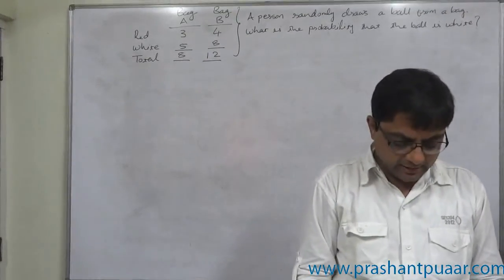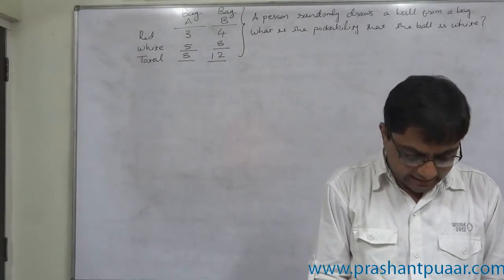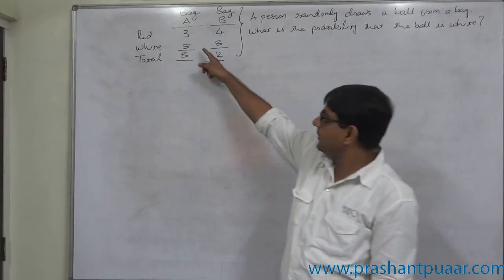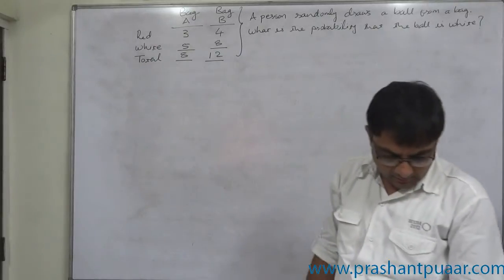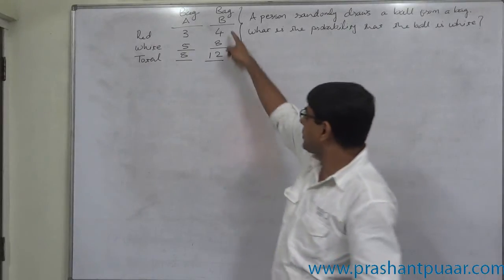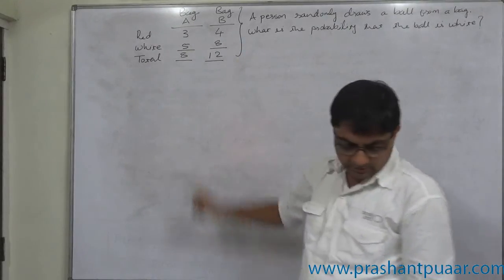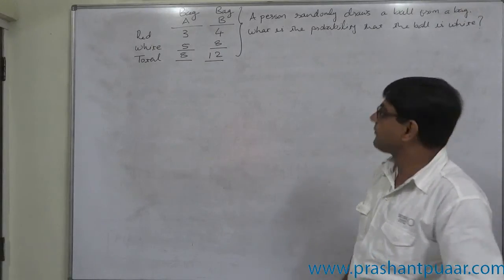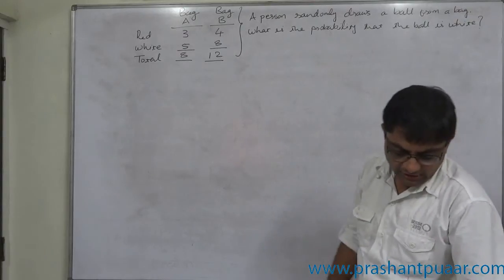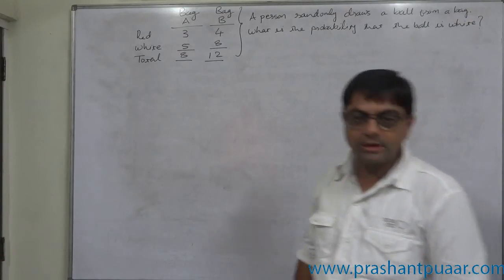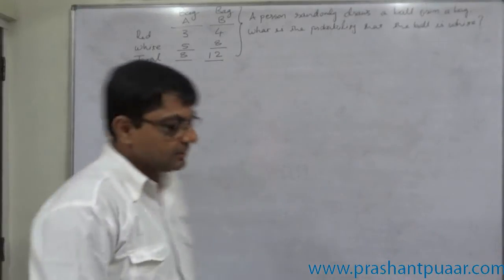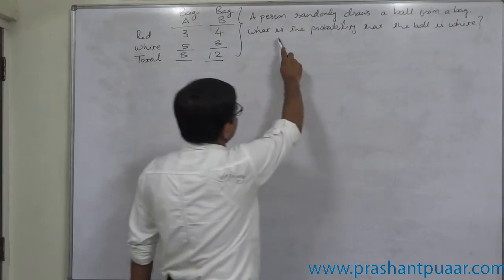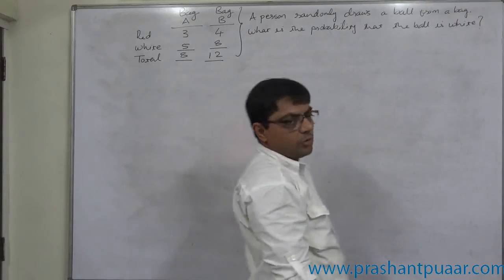The problem is: there are two bags A and B. Bag A contains 3 red and 5 white balls, meaning a total of 8 balls. Bag B contains 4 red and 8 white balls, meaning a total of 12 balls. A person randomly draws one ball from a bag. What is the probability that the ball is white?